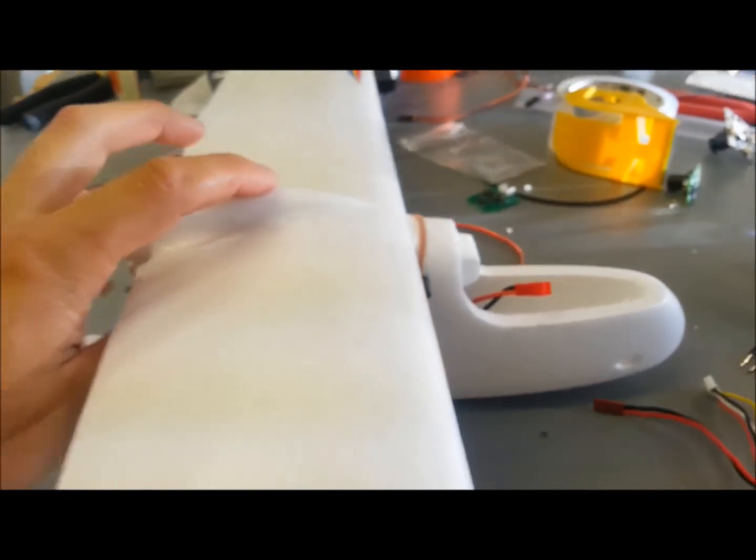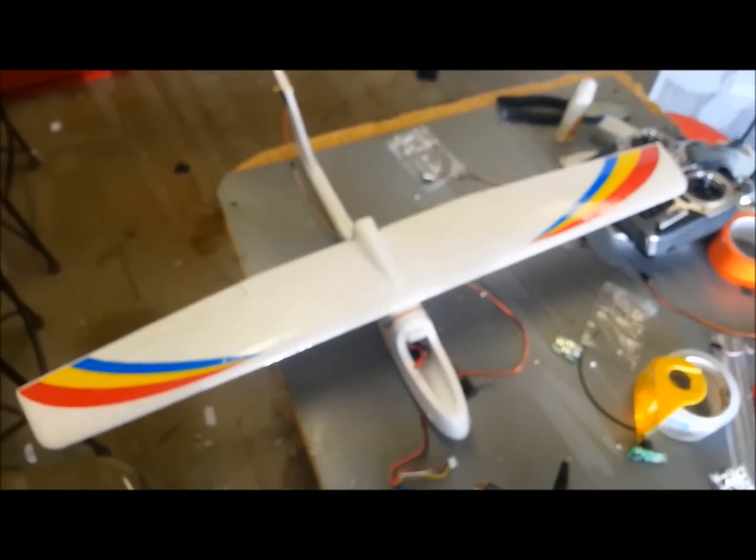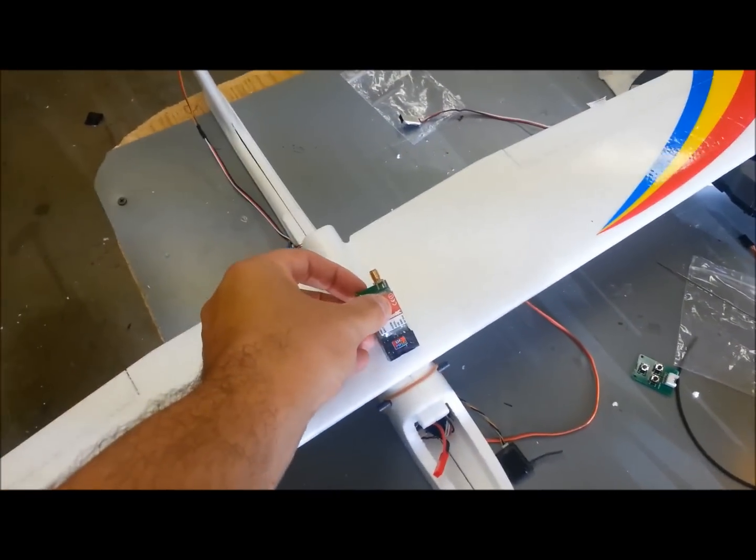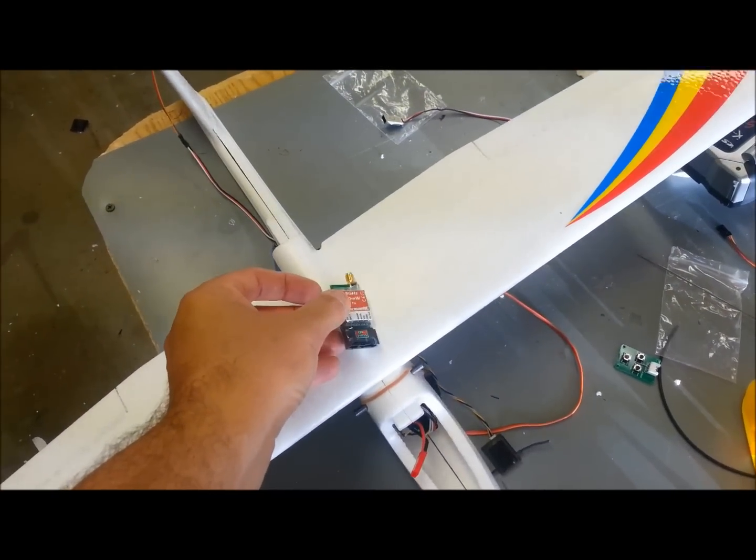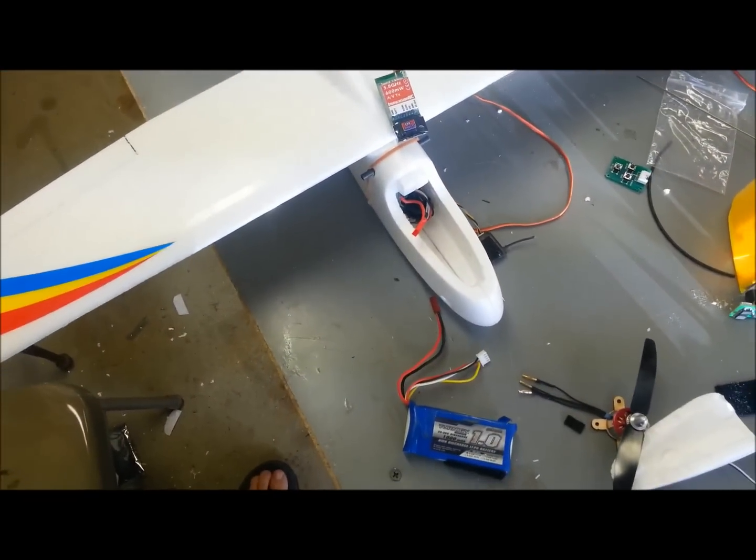Here it is with the wings on. And I'll be running a little immersion 600 milliwatt transmitter right here. And that will be feeding into my 808 keychain camera.